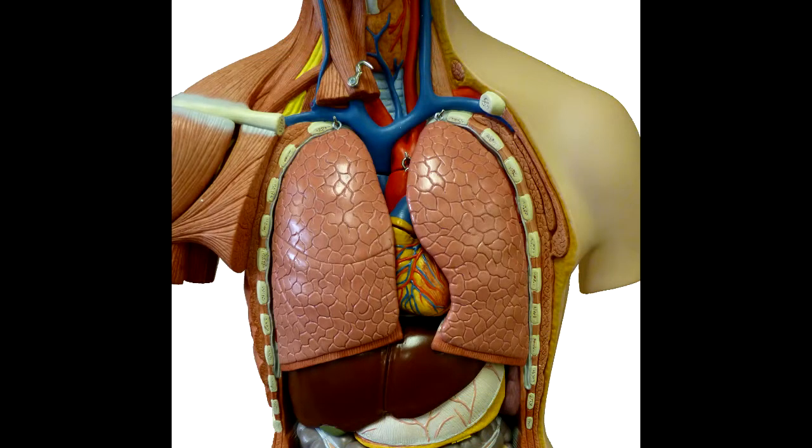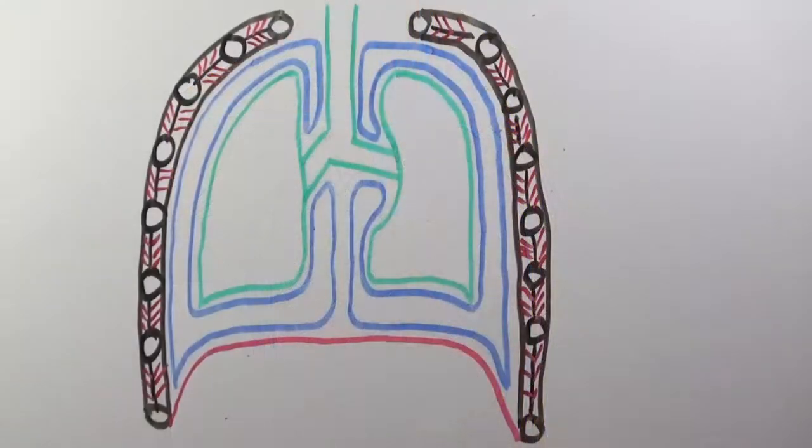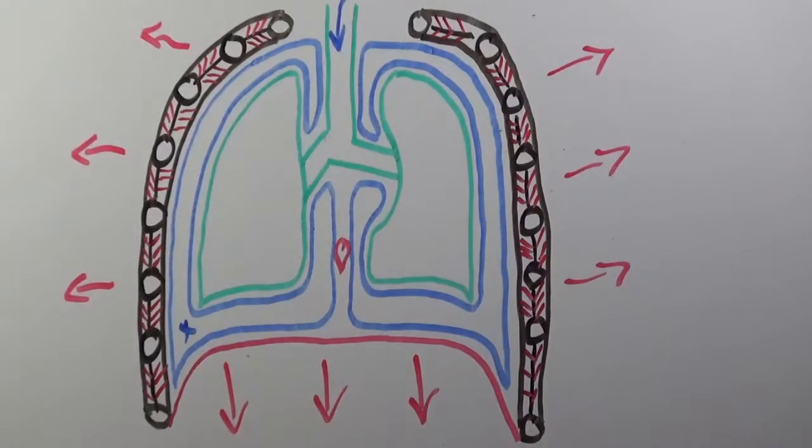The pleura are membranes that line surfaces inside the thoracic or ribcage. The parietal pleura is the membrane that lines the inside of the ribcage, while the visceral pleura is the membrane that covers the outer surface of the lungs.